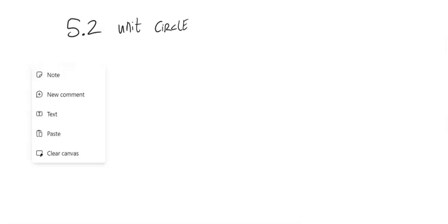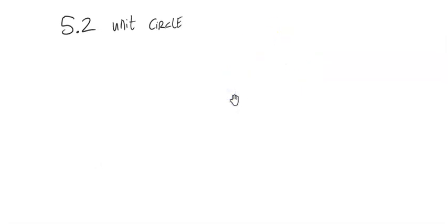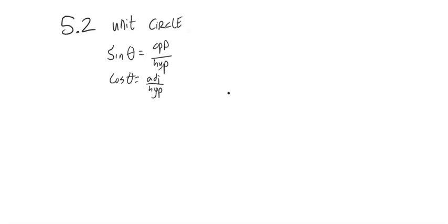If you remember back to geometry class, you were probably introduced to SOHCAHTOA, where sine of some angle is opposite over hypotenuse, or cosine of some angle is adjacent over hypotenuse. We have some angle, some opposite side, some adjacent side, and hypotenuse.